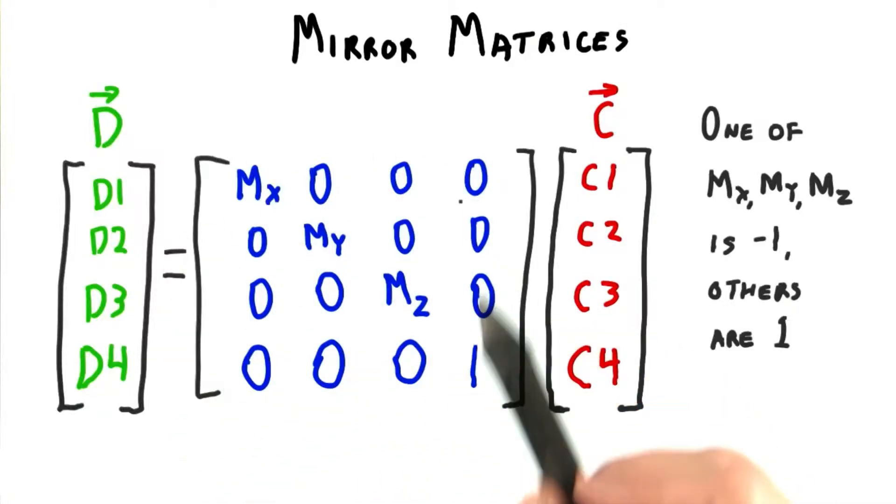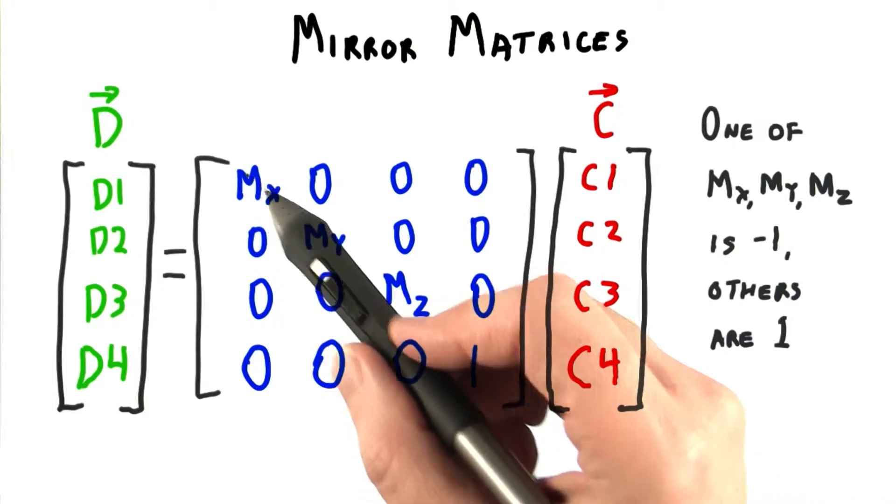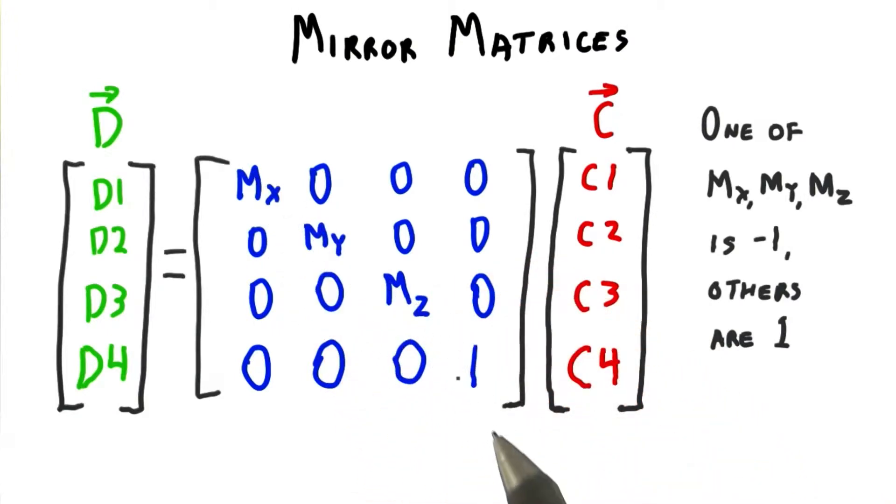One transform matrix worth a quick mention is the mirror matrix, also called the reflection matrix. This matrix usually has one element be a negative 1, and the other two are 1's.